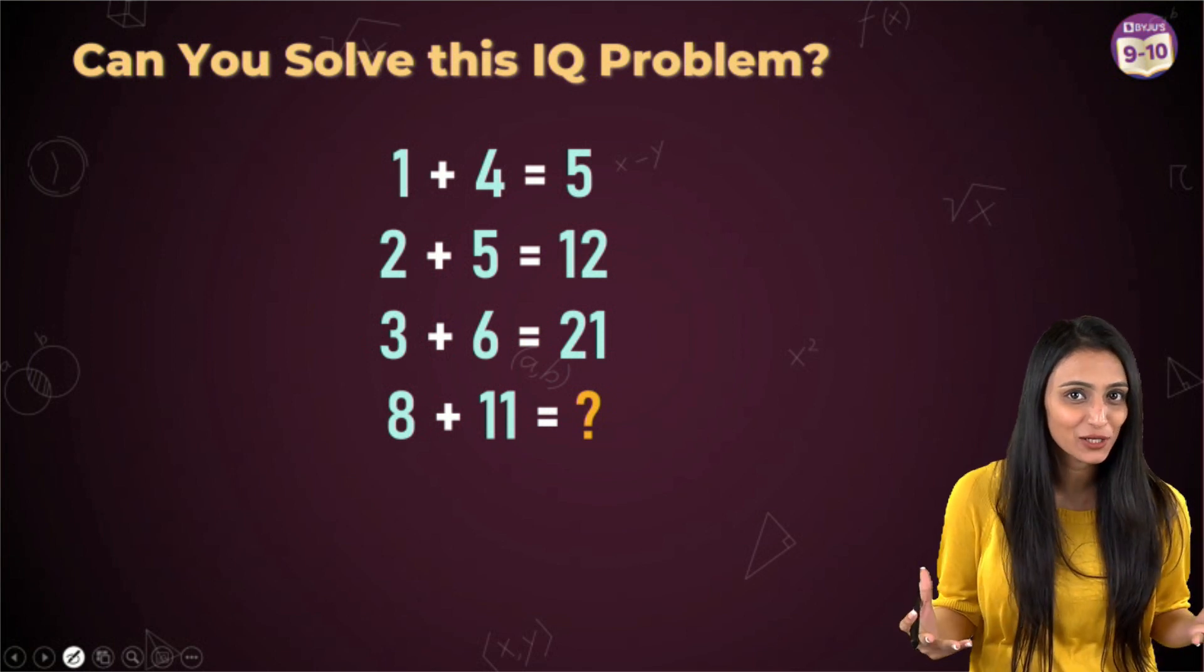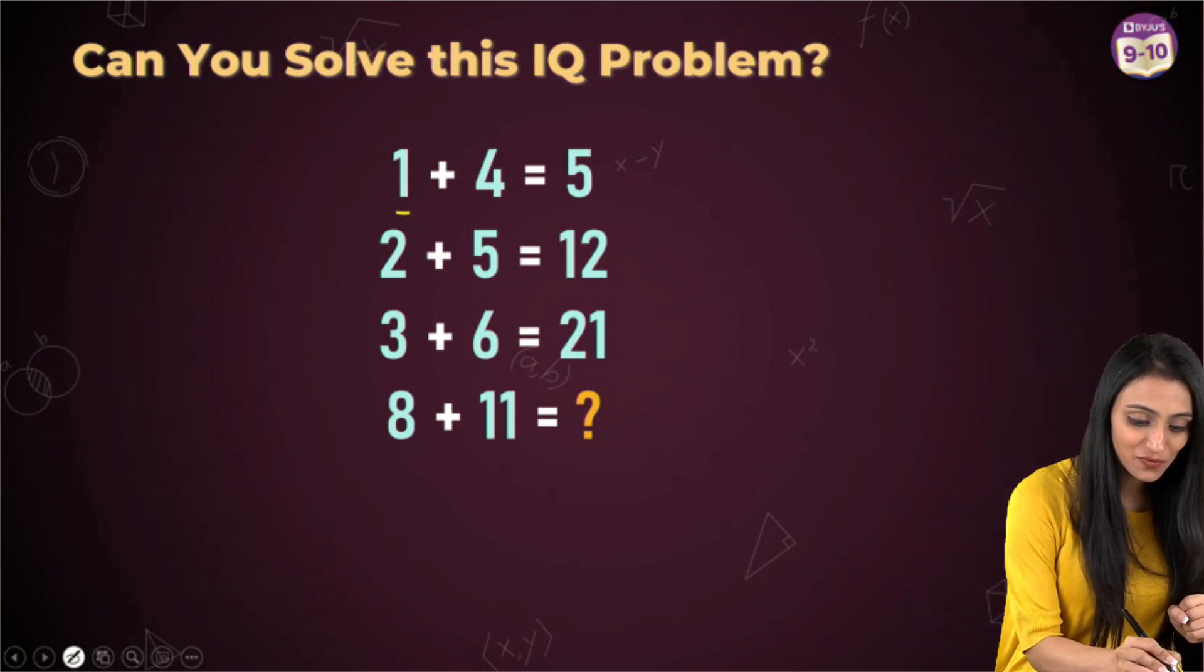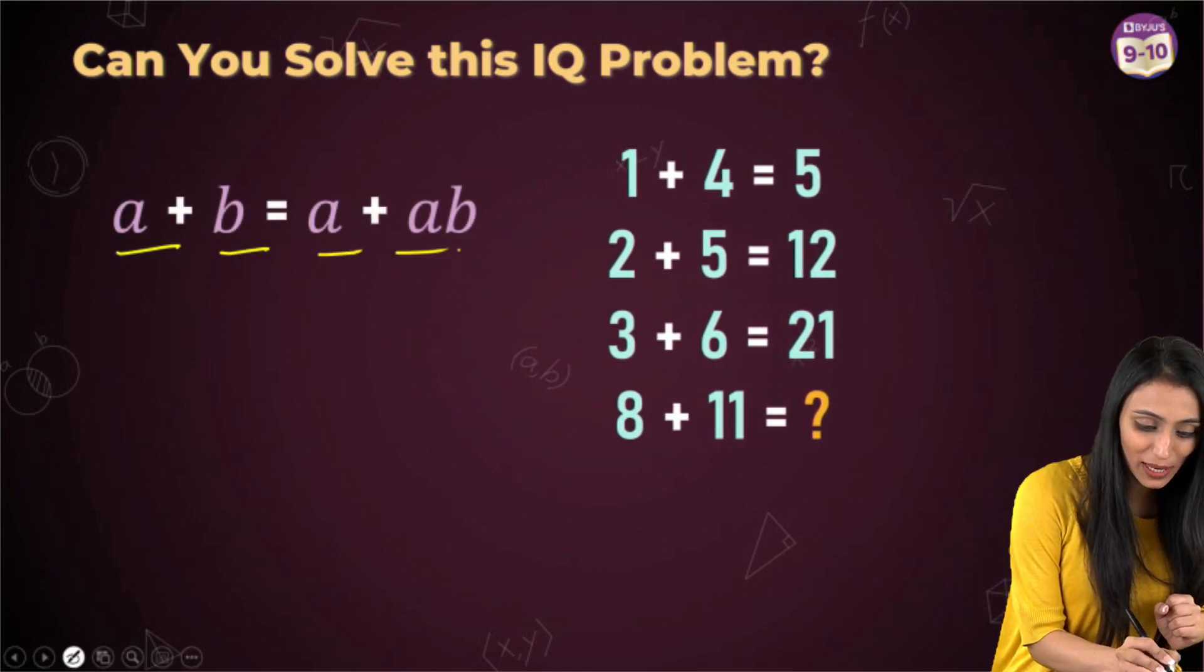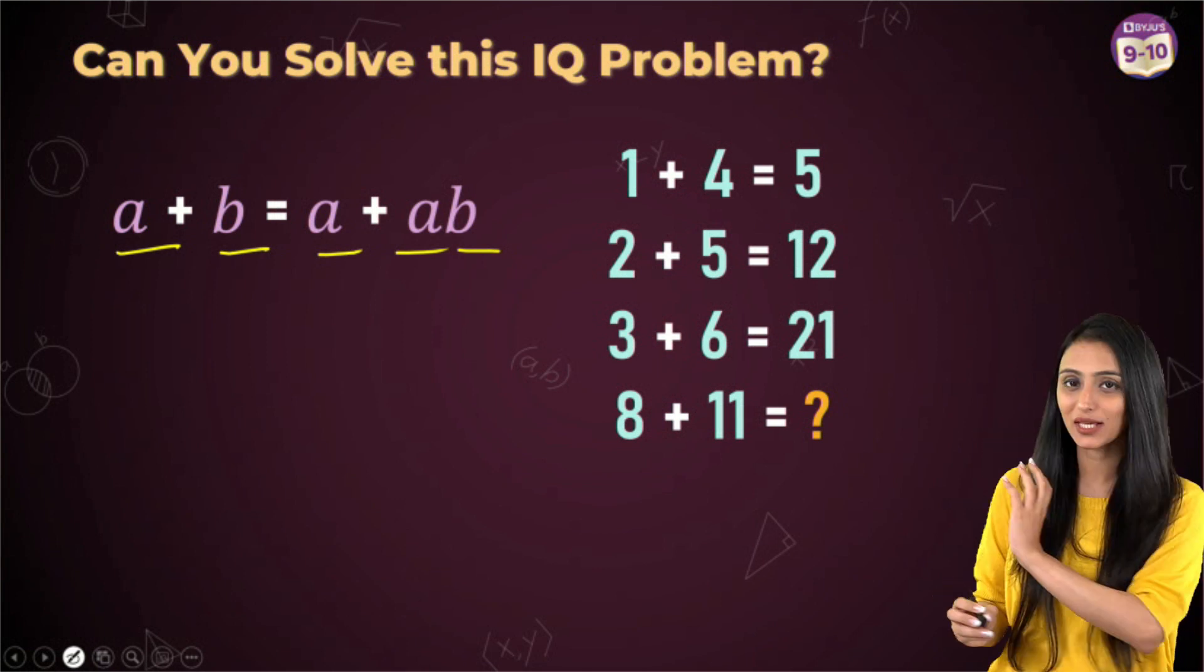So are we able to observe the pattern over here? So 1 plus 4 is 5. So what we can observe here is, it's basically A plus B equals to A plus AB. Now let me explain you this for every step.